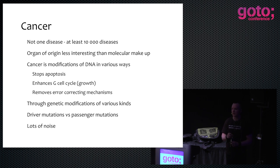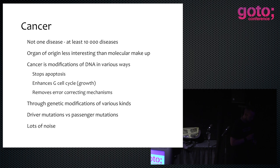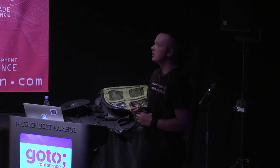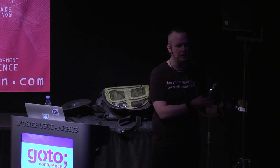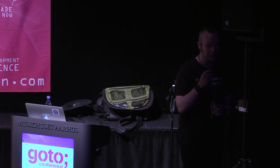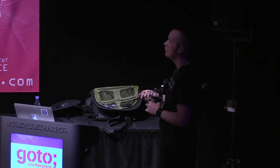There was a famous actress a few months ago — Angelina Jolie — who decided to have her breasts removed. The reason she did this was because she discovered she had a mutation in a gene called BRCA1. BRCA1 is an error correction mechanism — the only reason you have that protein in your body is to stop your body from developing breast cancer. There are a lot of different pieces of machinery inside the body that just exist to stop these things from happening. But if a mutation happens in one of them, you have a much higher risk of getting one of these cancers.